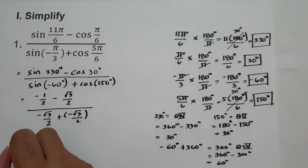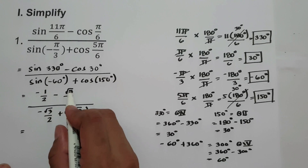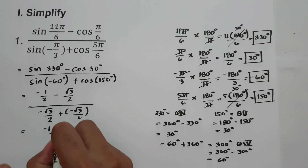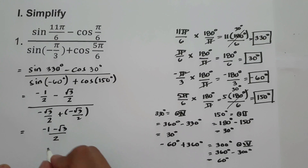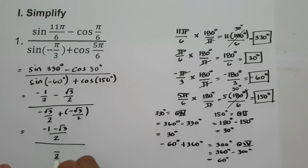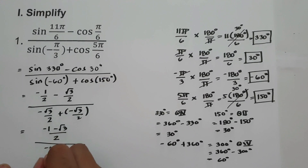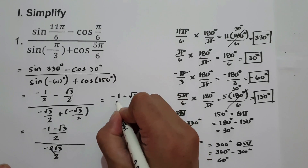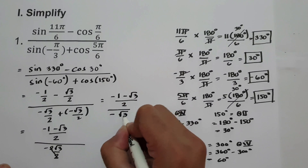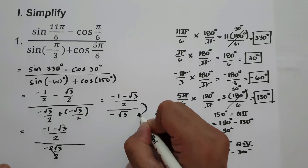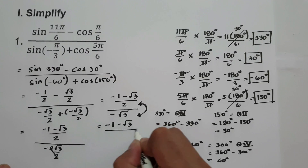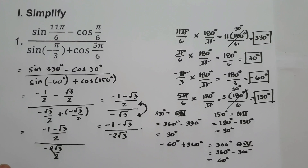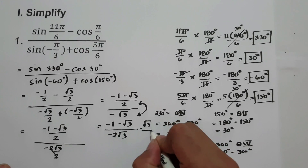Let us now simplify our answer. In the numerator we have negative 1/2 minus square root of 3 over 2. Since they have the same denominator, we write negative 1 minus square root of 3, all over 2. In the denominator, negative square root of 3 over 2 plus negative square root of 3 over 2 equals negative 2 square root of 3 over 2, which simplifies to negative square root of 3. So we have the fraction (negative 1 minus square root of 3 over 2) divided by negative square root of 3.